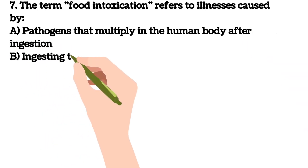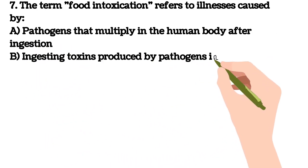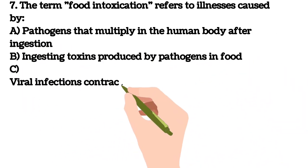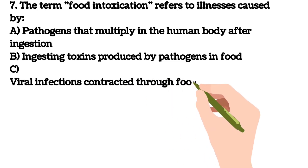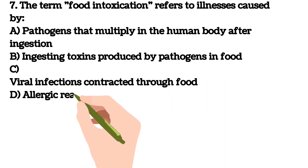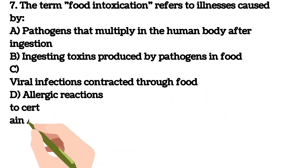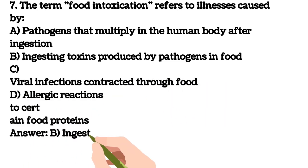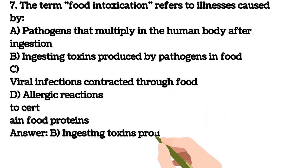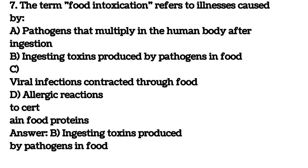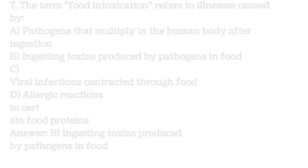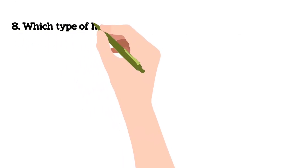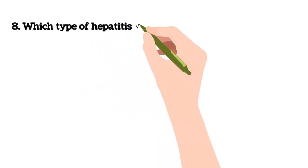Seventh question: the term 'food intoxication' refers to illness caused by — A) pathogens that multiply in the human body after ingestion, B) ingesting toxins produced by pathogens in food, C) viral infections contracted through food, D) allergic reactions to certain food proteins. The answer is B) ingesting toxins produced by pathogens in food.